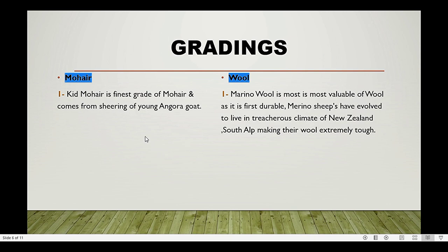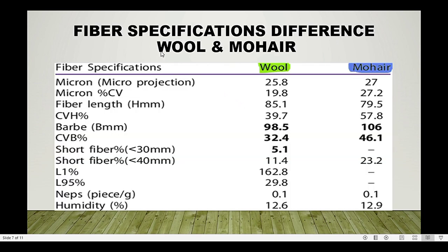With respect to gradings: kids mohair is the finest grade and comes from the shearing of young Angora goats — it is the main source for fine mohair. For wool, merino wool is the most valuable; merino sheep have evolved in the nutritious climate of New Zealand and South Alps, making their wool extremely tough. Merino wool is most expensive compared to other wool categories and is widely preferred in the textile sector.